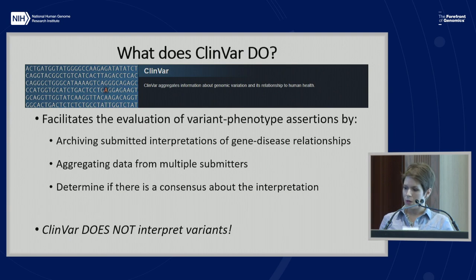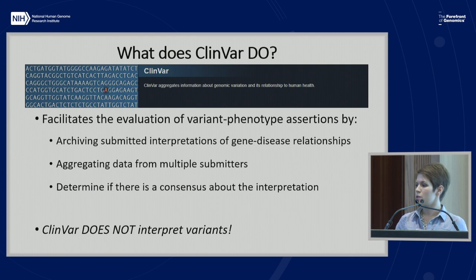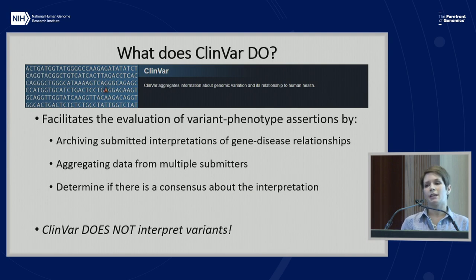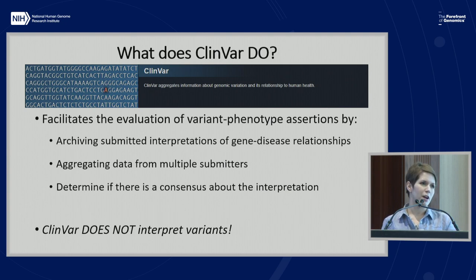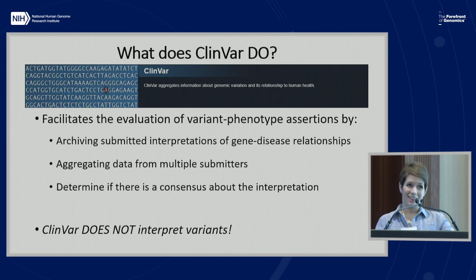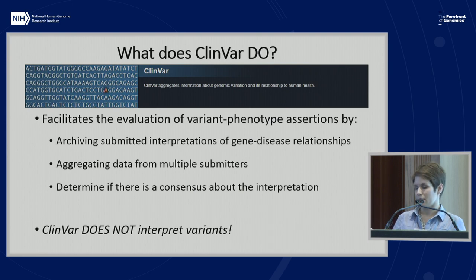So what does ClinVar do? It facilitates the evaluation of variant-phenotype assertions by archiving submitted interpretations of gene-disease relationships, aggregating data from multiple submitters, and determining if there's a consensus about the interpretation. The most important thing it does NOT do is interpret variants itself. A lot of times we hear people say 'ClinVar said the variant is this' — ClinVar said nothing. ClinVar is showing you what the submitters provided about that particular variant.